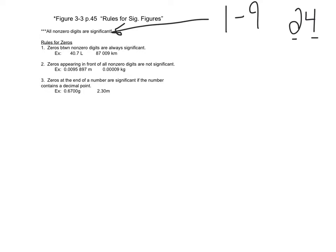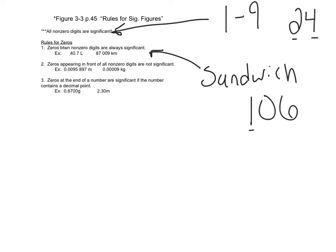The next set of three rules deals with zeros, because zeros can be significant or they might not be — it just depends on how they're written. The first rule I call the sandwich rule: if a zero is sandwiched between two non-zero digits, it's significant — it was measured. Any zeros in the middle are always significant, so I don't really worry about that rule.